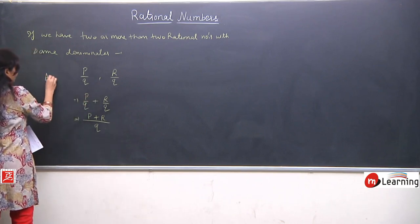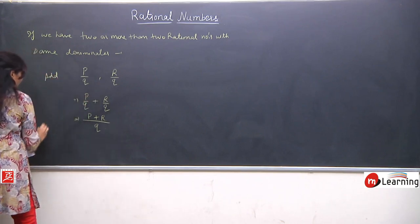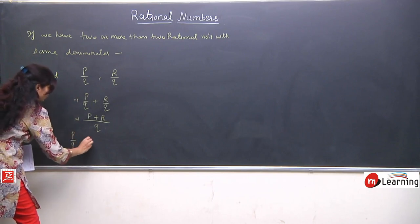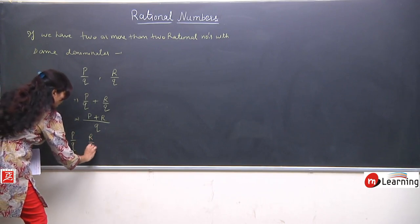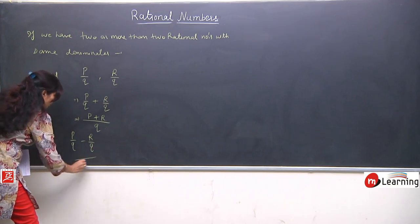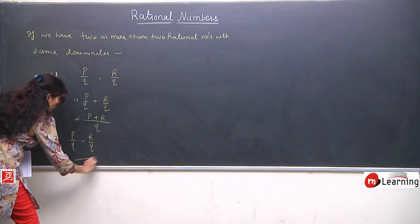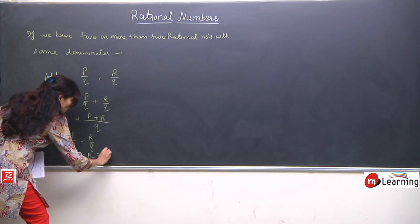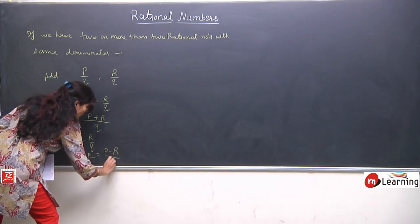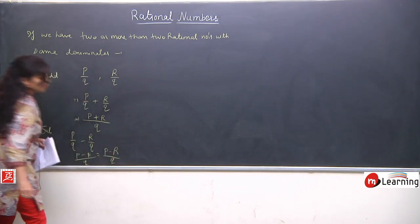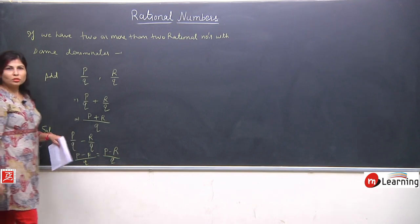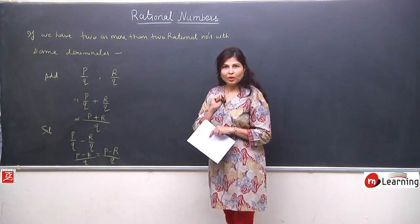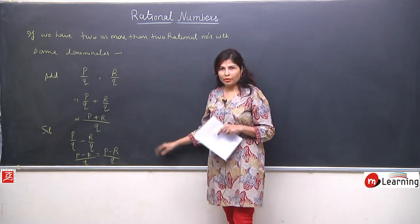The same property applies for subtraction. If we have P upon Q and R upon Q and we need to subtract them, the LCM stays the same, so the answer will be P minus R upon Q. This means we need to subtract only the numerators.